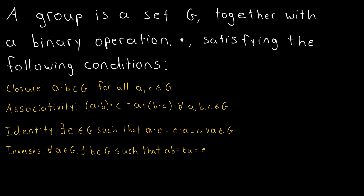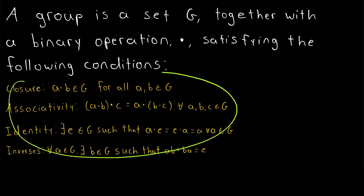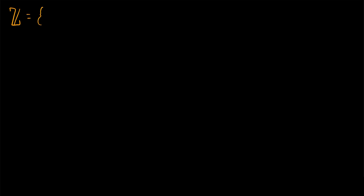Let's take a look at an actual example of a group, and we'll identify the group axioms. Consider the set of integers, often represented with a Z. This is the set containing numbers like negative two, negative one, zero, one, two, and so on forever in the positive and negative directions. A group just consists of a set and some binary operation on the set that follows the group axioms. For our operation, let's go ahead and try addition — so we're looking at the binary operation of addition acting on the integers.